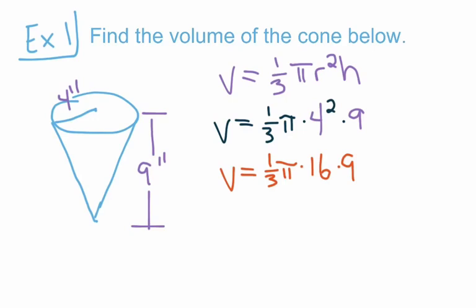For our next line of work, we're going to get our exact volume. To do that, we multiply one-third times 16 times 9 together. When we multiply those together, we get V equals 48 pi inches cubed. That is our exact volume — 48 pi inches cubed.